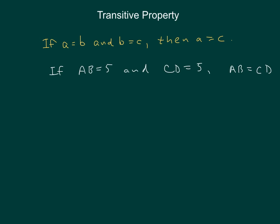Let's take a closer look. In order to have the transitive property be useful, we need two equations. So AB equals 5, we'll call that equation 1, and CD equals 5, we'll call that equation 2. So we have two equations.